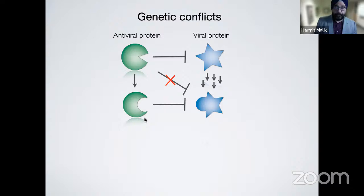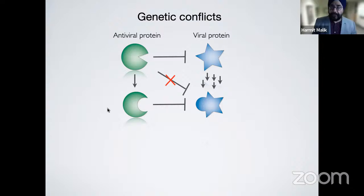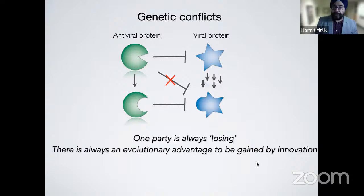This puts pressure back on the host population to re-establish antagonism of the virus. Viruses have a huge advantage — they evolve very rapidly and have access to much higher population sizes than host genes. But host genes have some tricks up their sleeve that we'd like to uncover. In this system, either the virus or the host is winning, so there's always evolutionary advantage to be gained by genetic innovation, especially in protein-coding genes.